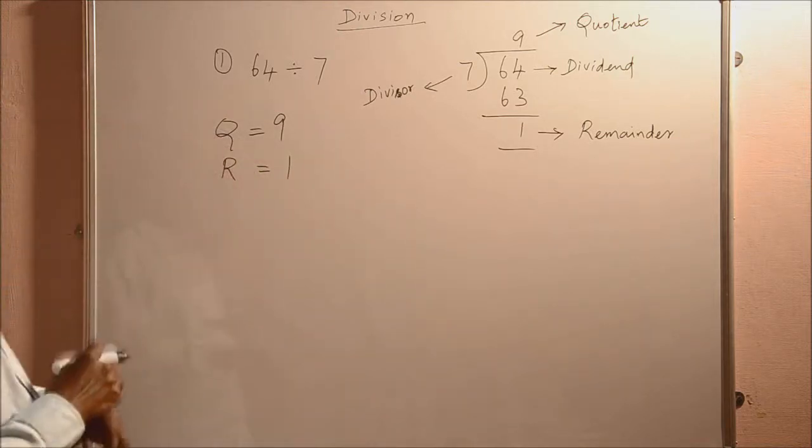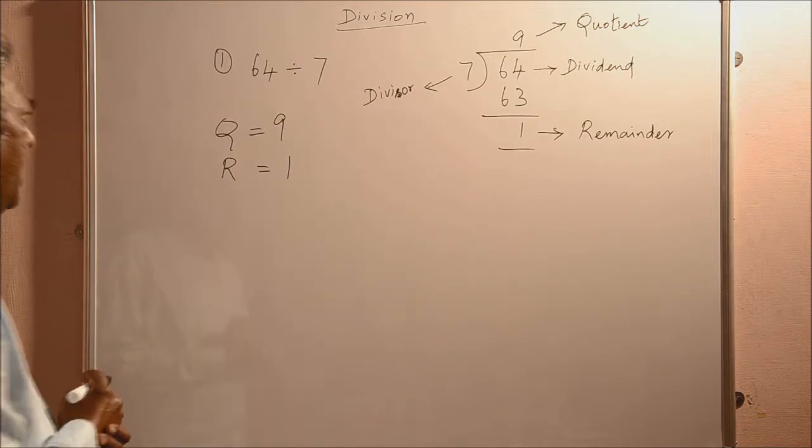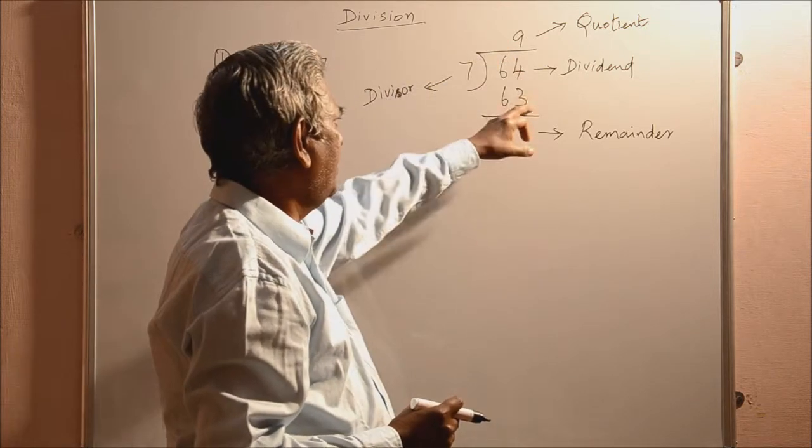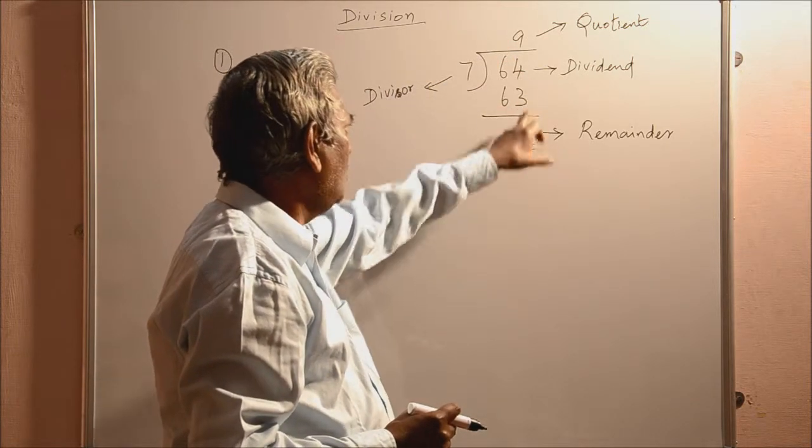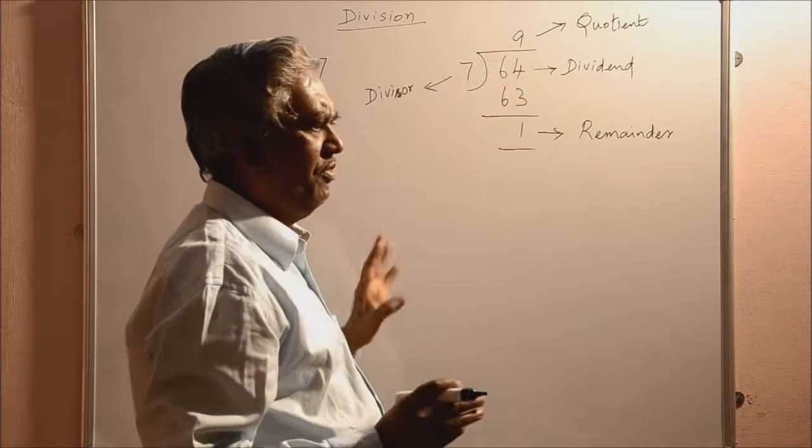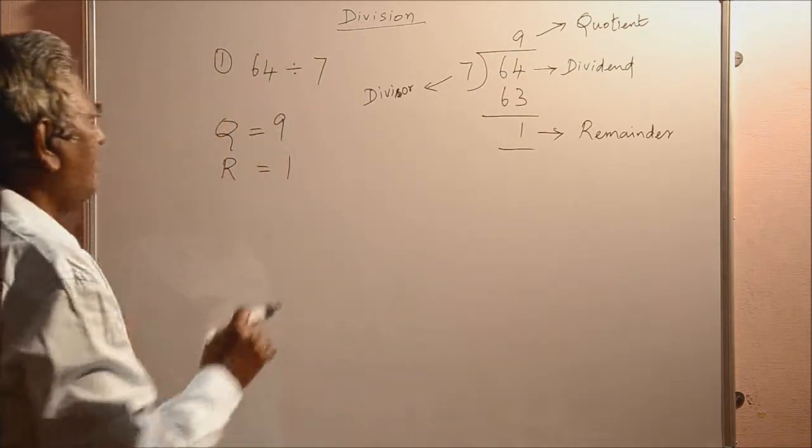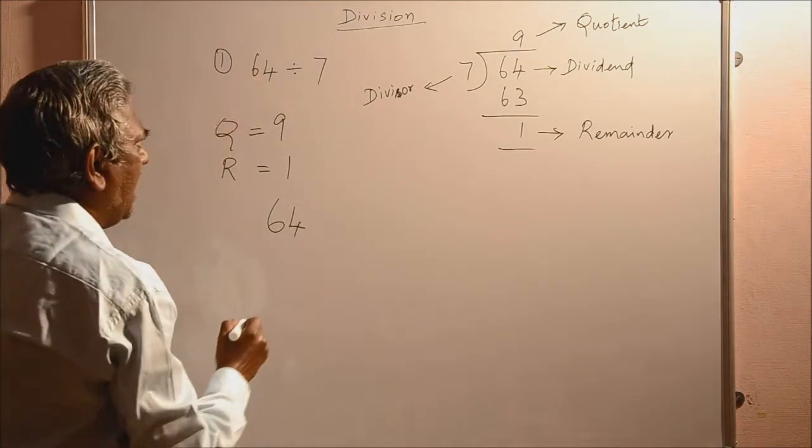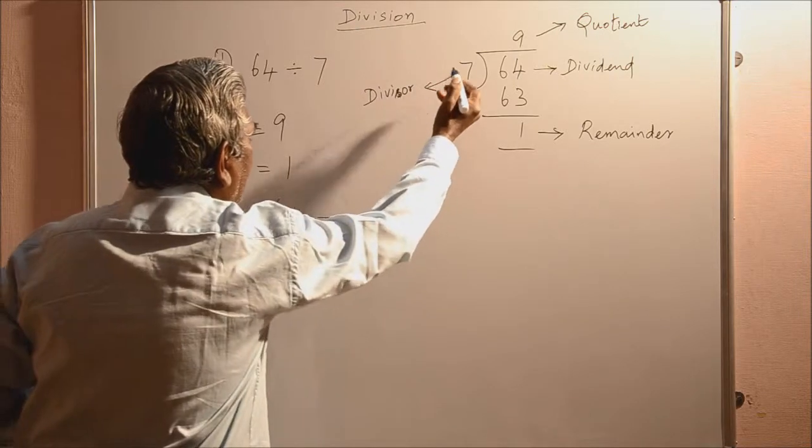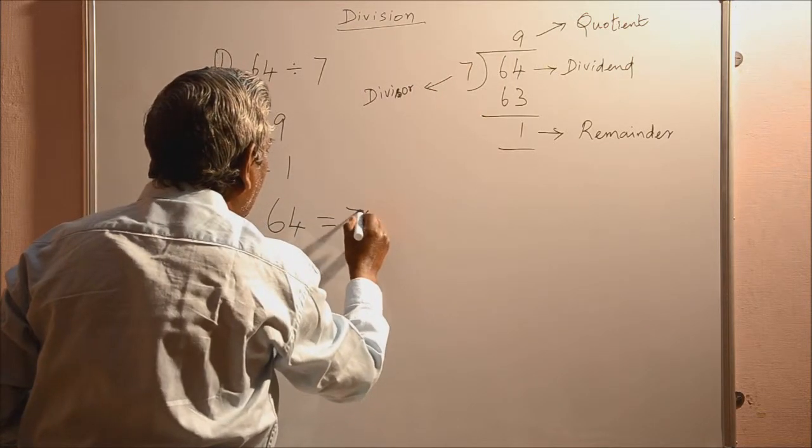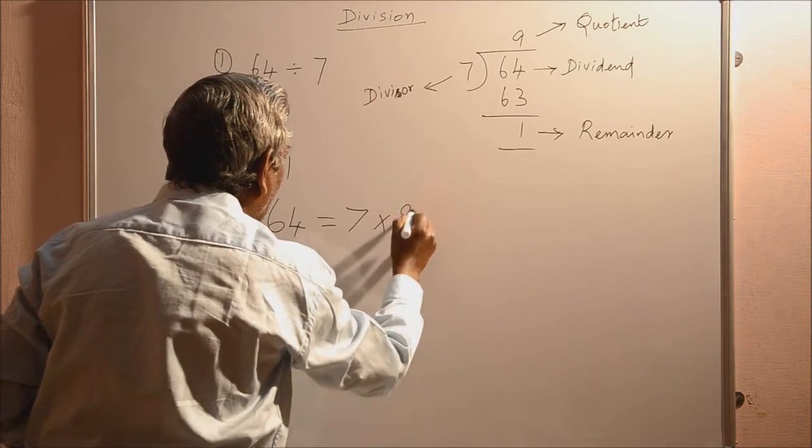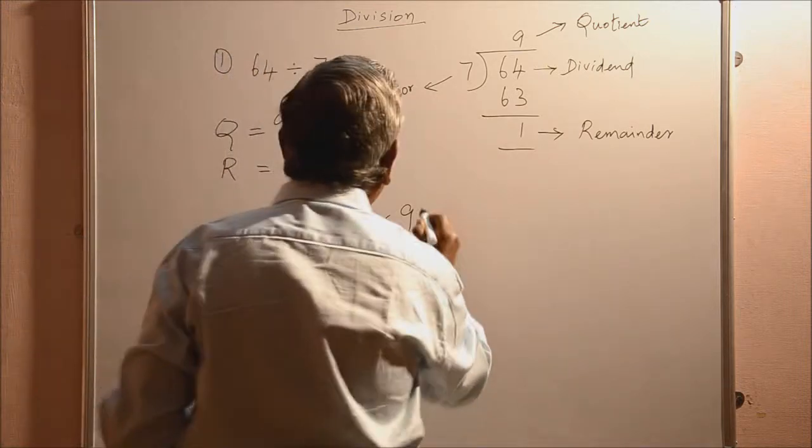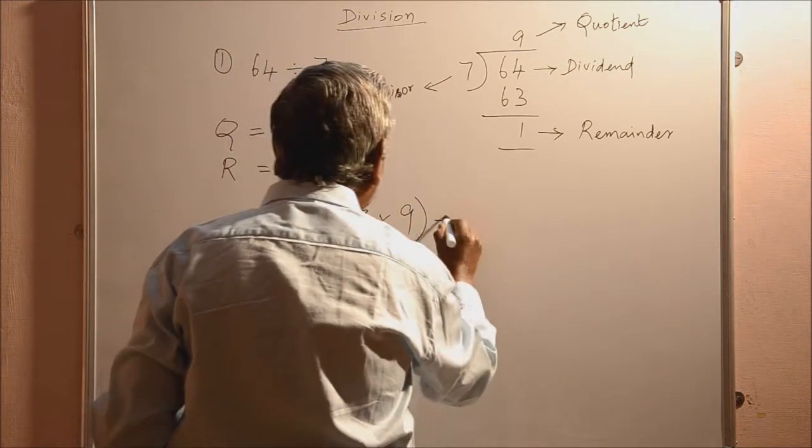So, what is the relationship between these things that we are going to see now. See, when 7 is multiplied by 9, you get 63. And when you add 1 to this 63, you get 64. So, 64 can be written as 7 into 9, 7 multiplied by 9, then plus 1.